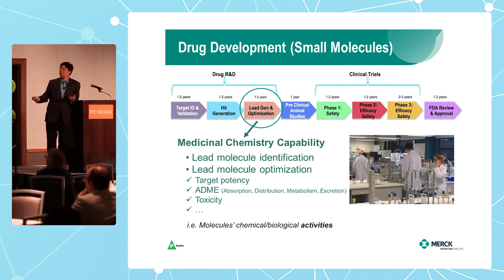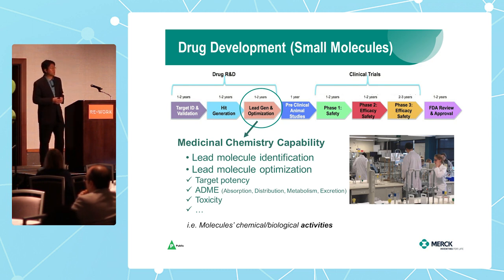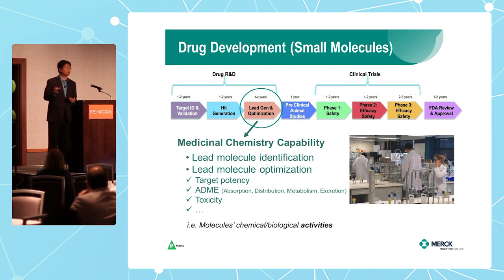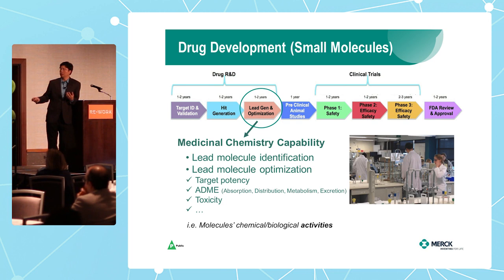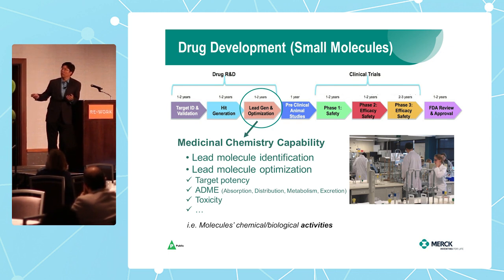Along this process there is one step requiring very deep and strong medicinal chemistry capability — basically refining your lead. All the chemists say it's relatively easy to find a chemical to address a particular target, but the difficult part is making it potent and also making your body accept it properly: your body can absorb it, distribute it, metabolize it, and finally get rid of it — with no toxicity to other parts of the body. All those properties are called chemical biological activity.